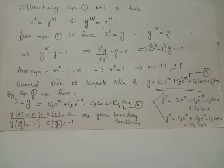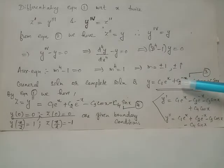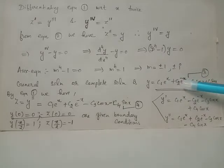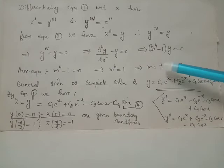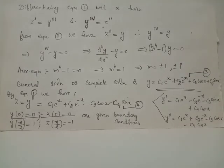The general solution is y equals c1 e raised to x plus c2 e raised to negative x plus c3 cos x plus c4 sin x, where c1, c2, c3, and c4 are arbitrary constants. The terms c1 e^x and c2 e^{-x} come from roots plus minus 1, and corresponding to roots plus minus i, we get the terms c3 cos x plus c4 sin x.